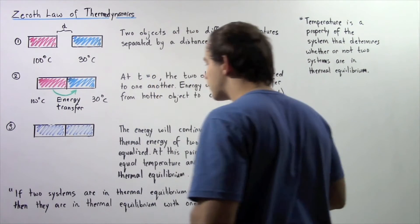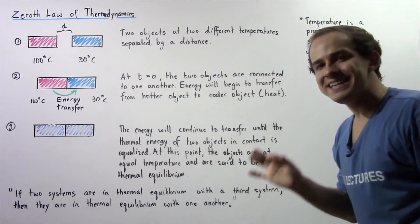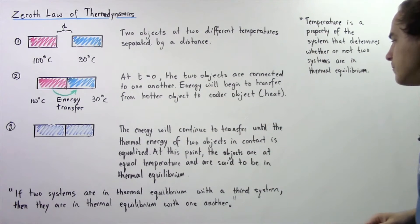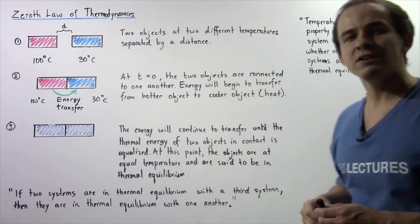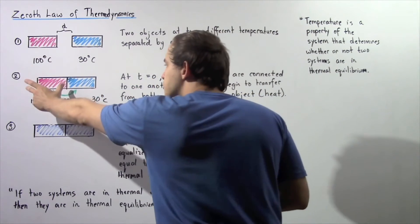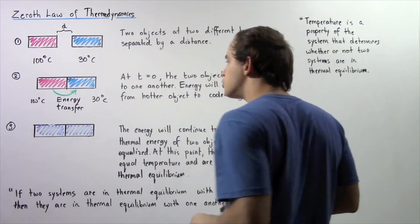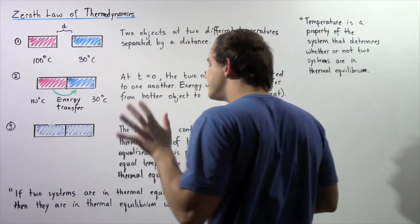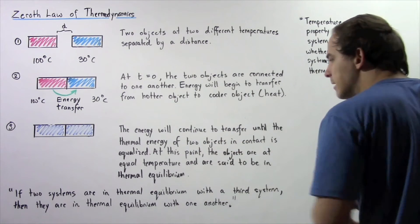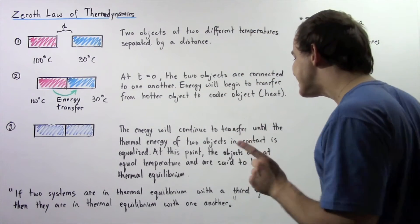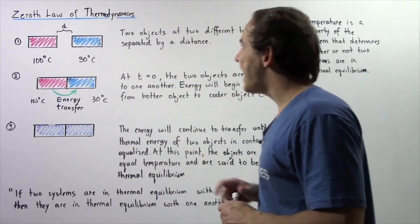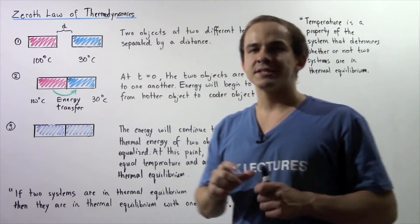Now let's move on to diagram three. The energy will continue to transfer until the thermal energy of the two objects in contact with one another is equalized. The energy will continue to flow from system number one to system number two until they have the same exact thermal energy. At this point, the objects are at equal temperature and are said to be at thermal equilibrium. And this is exactly where the zeroth law of thermodynamics comes in.